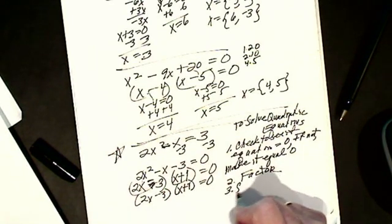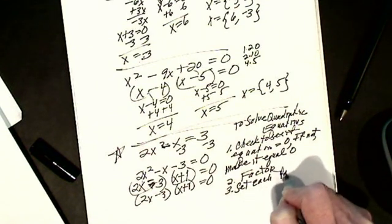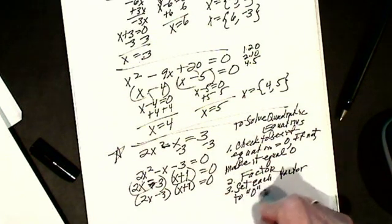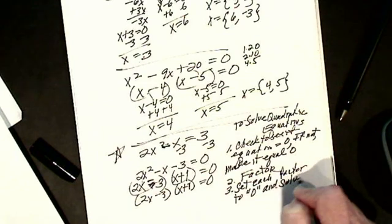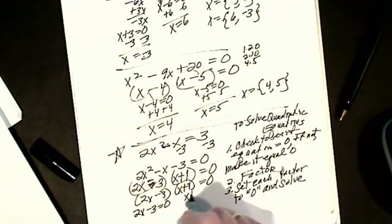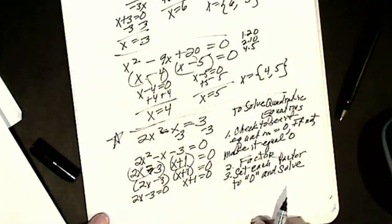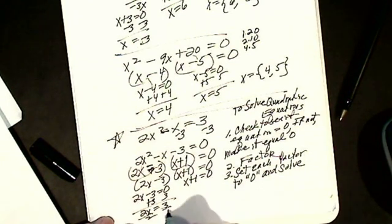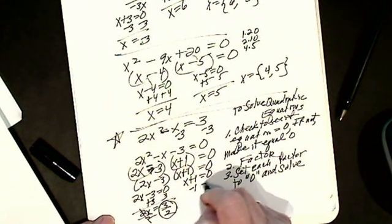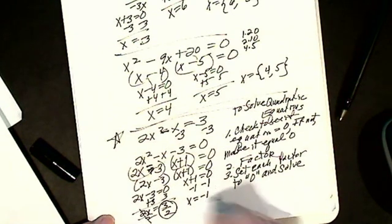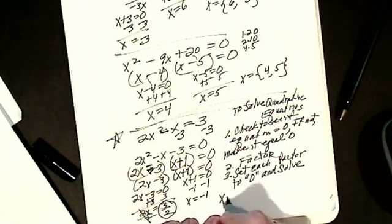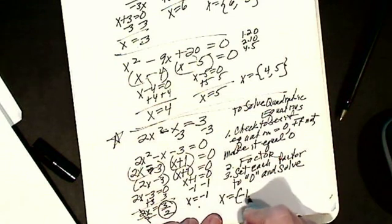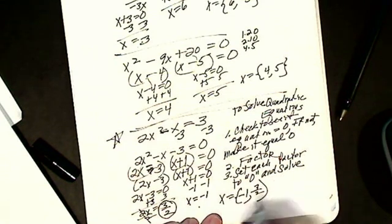Step 3: Set each factor to 0 and solve. I have 2x minus 3 equals 0 and x plus 1 equals 0. Solving the first: add 3 to get 2x equals 3, then divide by 2, so x equals 3 halves. Solving the second: subtract 1, so x equals negative 1. My solution is x equals negative 1 and x equals positive 3 halves. They take a little practice.